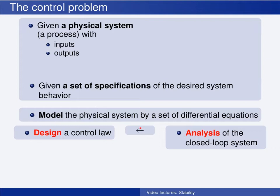Other times, we start with the analysis, and based on this we choose the controller to obtain the desired closed-loop system behavior. Or, we design a controller, analyze the closed-loop system, and this shows that the system behavior is not as desired, and then we have to go back and redesign the controller. So we may need to go back and forth a couple of times before we are satisfied with the controller and the properties of the resulting closed-loop system.